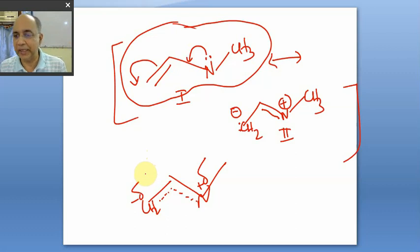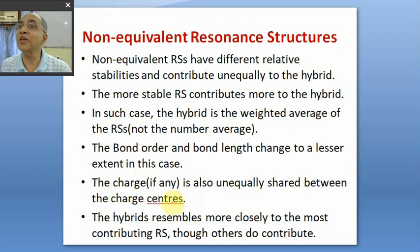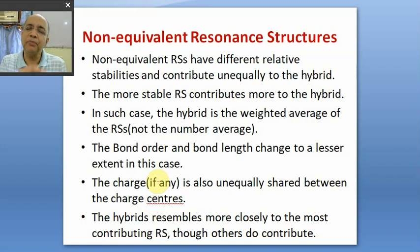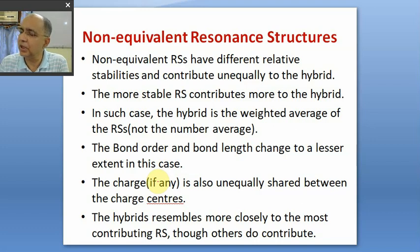The charge, since the RSS are non-equivalent, is unequally shared between charge centers. You cannot write plus half, minus half. You cannot write minus 2/3 like the carbonate ion. You have to distribute the charge unequally, writing plus delta or minus delta. You cannot quantitatively estimate the percentage of contribution, but you can say which RS is dominating and which is totally insignificant.